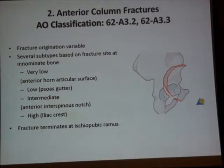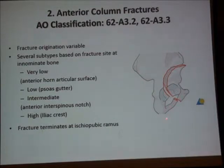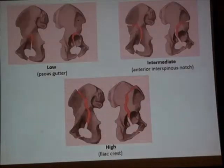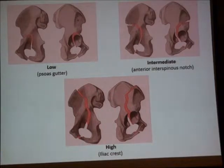The second fracture is the anterior column fracture, which has several varieties: very low, low, intermediate, or high fracture according to the origin of the fracture line. But in all types, we have disruption of the ischio-pubic ramus — this differentiates it from the anterior wall fracture. The interruption in the high fracture is at the iliac crest.